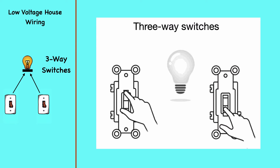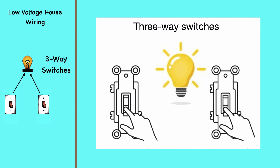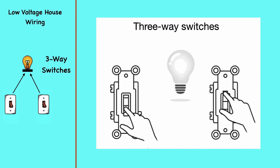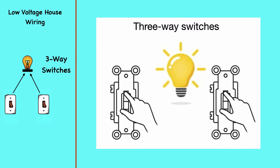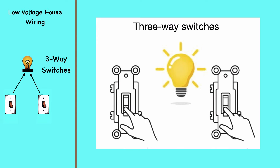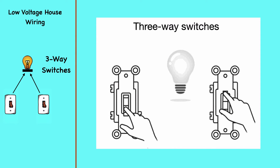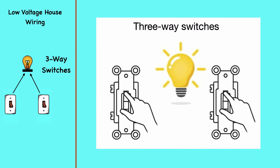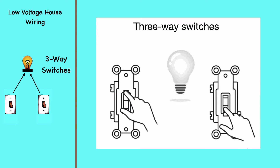Depending on the manufacturer, the travelers may be on opposite sides of the device, or the two terminals may be on the same side. In any case, the common terminal will be distinguished from the travelers in some way. The common terminal will always be connected to a hot wire, either from the source or on the light fixture. These connections can be reversed if it's more convenient, as long as one of the three-way common terminals connects to the hot source and the other connects to the hot on the load — these circuits will work properly.